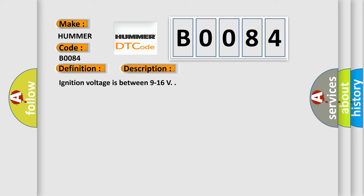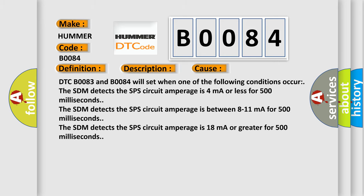This diagnostic error occurs most often in these cases: DTC B0083 and B0084 will set when one of the following conditions occur. The SDM detects the SPS circuit amperage is 4 mA or less for 500 ms. The SDM detects the SPS circuit amperage is between 8 to 11 mA for 500 ms. The SDM detects the SPS circuit amperage is 18 mA or greater for 500 ms.